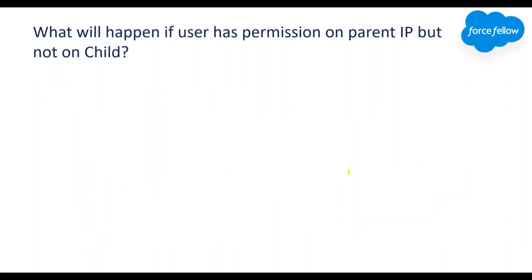Regarding permissions: we can control access to Data Raptors or integration procedures using sharing settings, profiles, and permission sets by implementing the VelocityRequiredPermissionCheck class. If a user has permission on a parent integration procedure but not on the child, the parent can still invoke the child even if the user doesn't have direct access — so if we have permission on the parent, the child integration procedure will also get called.